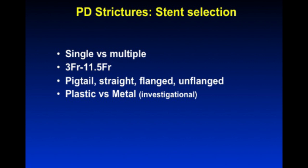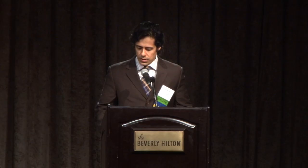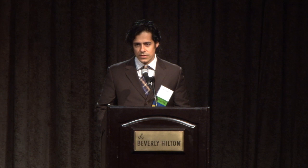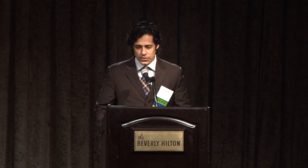In terms of stent selection, multiple stents may be better than a single stent, and there's at least one good series addressing this. Sizes range from 3 French to 11.5 French, with 5 to 7 French typically used, sized to the downstream non-dilated portion of the duct. I prefer single-flanged, single-pigtail stents. Plastic is standard; metal should be considered investigational with limited data. It's very important not to place a pancreatic stent backwards — if loaded backwards it will migrate inward, which becomes problematic.